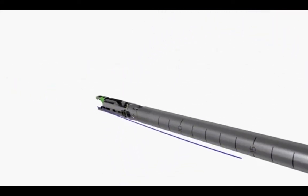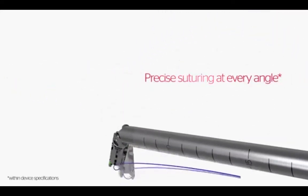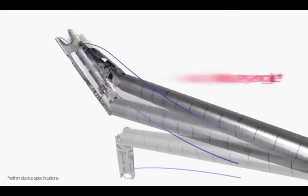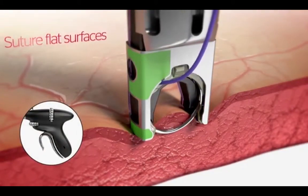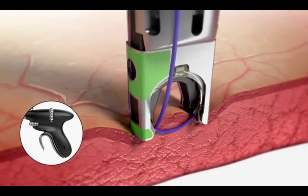ProxyShore enables precise suturing at every angle even in tight spaces not easily reached by a straight device. The curved needle enables suturing a variety of tissues including flat surfaces with minimum tissue manipulation.